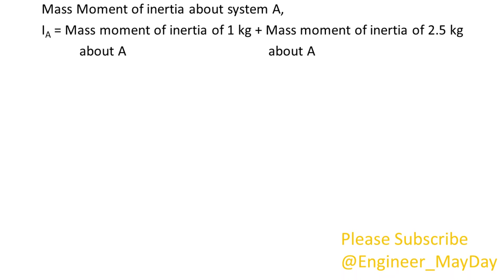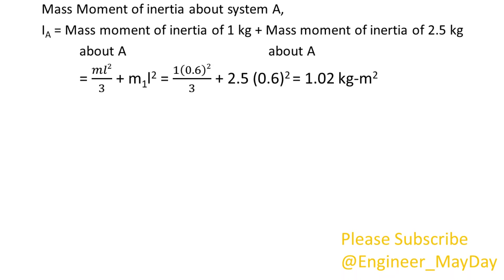Mass moment of inertia about point A: IA equals mass moment of inertia of 1 kilogram about A plus mass moment of inertia of 2.5 kilograms about A, which equals 1.02 kilogram squared meters.